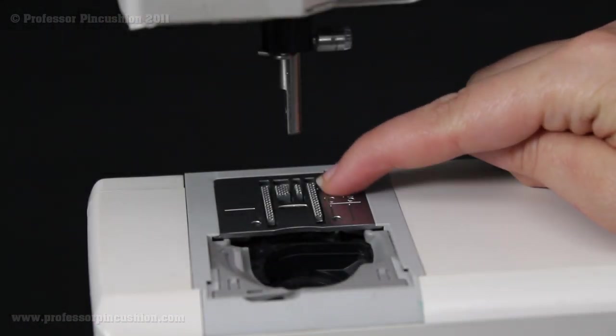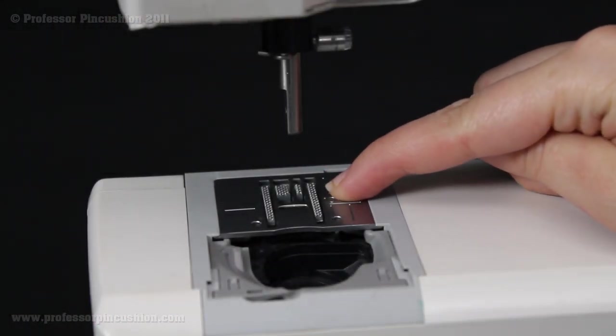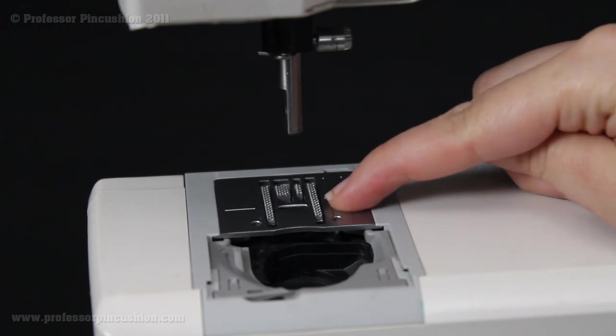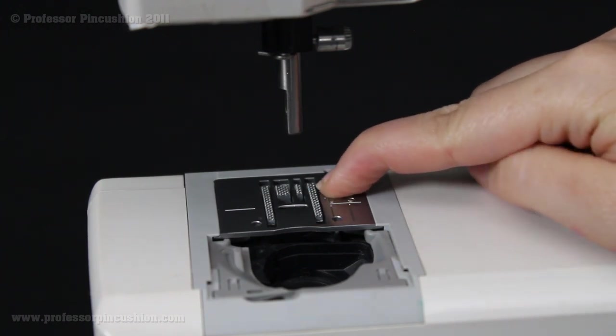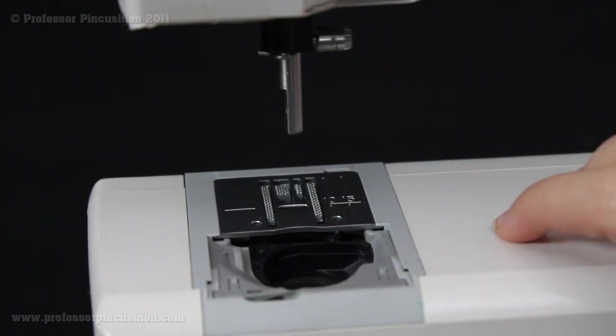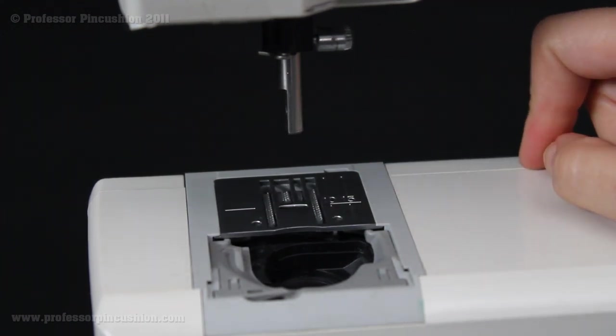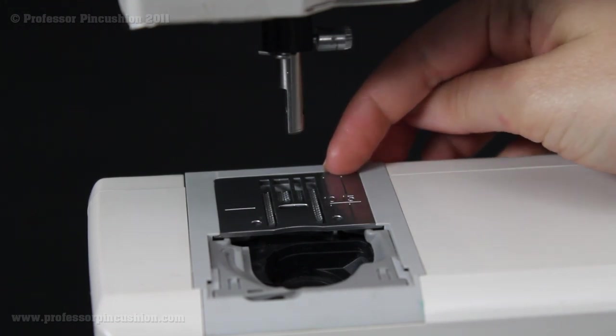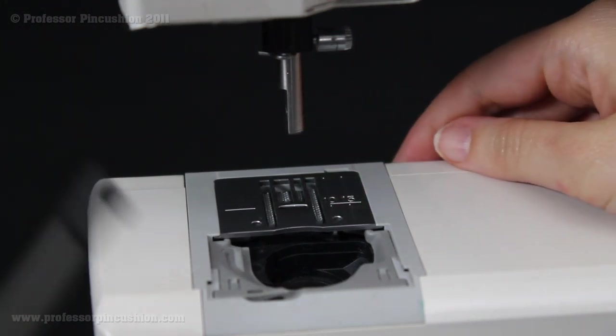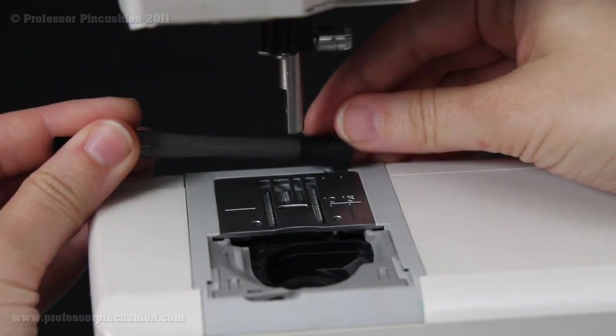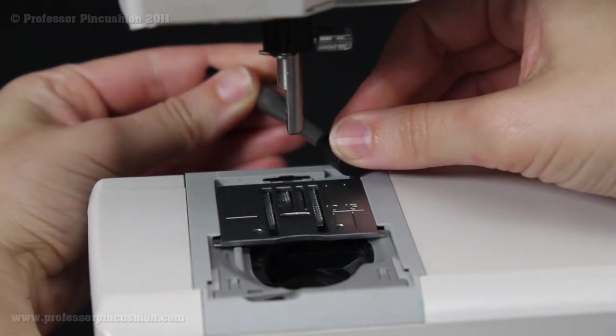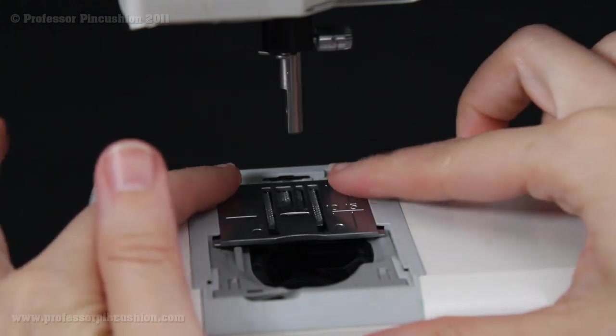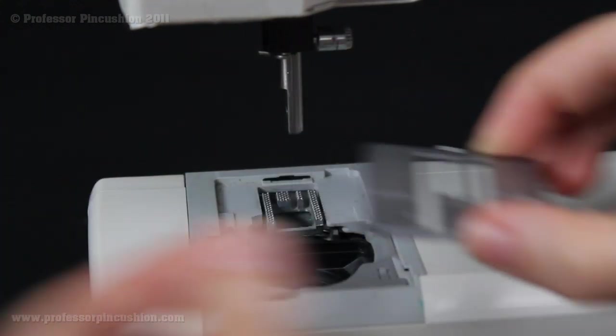So now we're going to be working around this part right here with the feed teeth area. The first thing you're going to do is lower the feed teeth and I have a little wheel underneath my arm here where I just move it and see it pop down there. I also have a little notch right on the back of this plate and I have a sewing machine tool that came with my machine. I'm just going to stick it in there and rotate it and see how this just slides out like that.